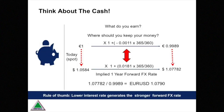We call this an implied forward FX rate because all of the future numbers are implied by the interest rates involved. So, if the dollar interest rate had been different, the future dollar amount would have been different, and obviously the forward FX rate would have been different.